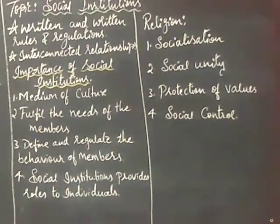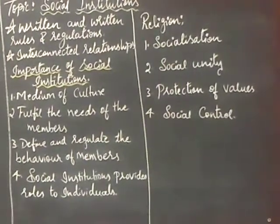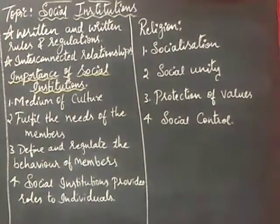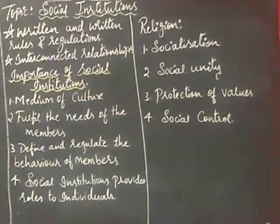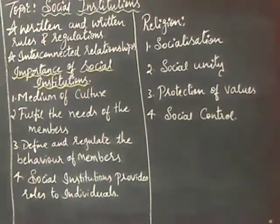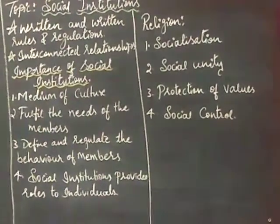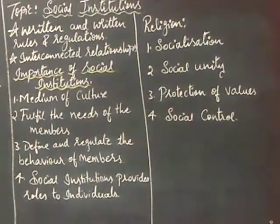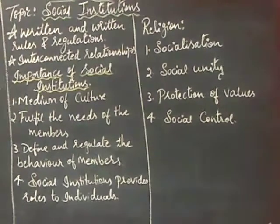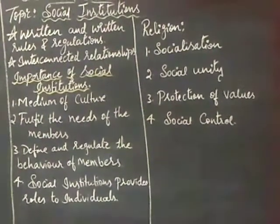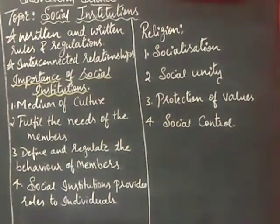Social institutions provide role induction. The members staying in a family, including age-old people, play a vital role — they try to correct our mistakes and say what is right and wrong. Family assigns relationships based on age. Similarly, social institutions assign roles to members by defining their relationships. In a modern family we see just parents and siblings, but when we stay together in a joint family, we learn so many things, including moral values.